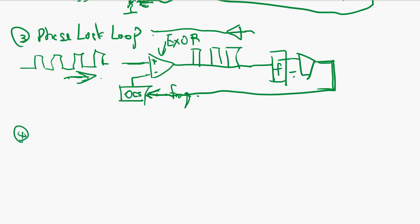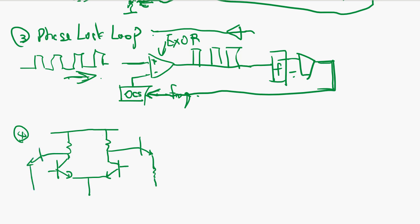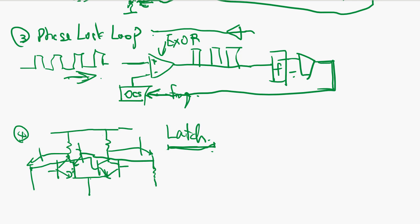In high-speed bipolar memory, you have an output that goes to the other side — this is positive feedback. It creates a latch, and this latch is stable. You need to understand why it's stable. In linear circuits, we often use negative feedback.